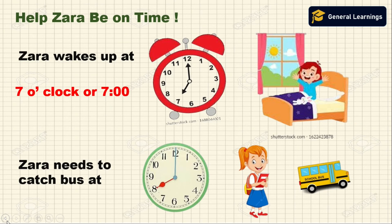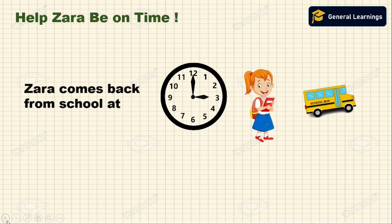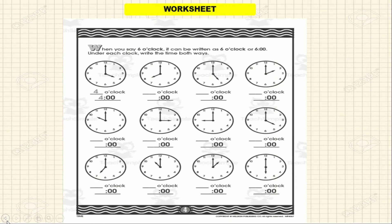Zara needs to catch the bus at 8 o'clock. Zara comes back from school — the minute hand is pointing to 12 and the hour hand is pointing to 3, so the time is 3 o'clock. Zara comes back from school at 3 o'clock. Now I have given some worksheets — please do them at home.